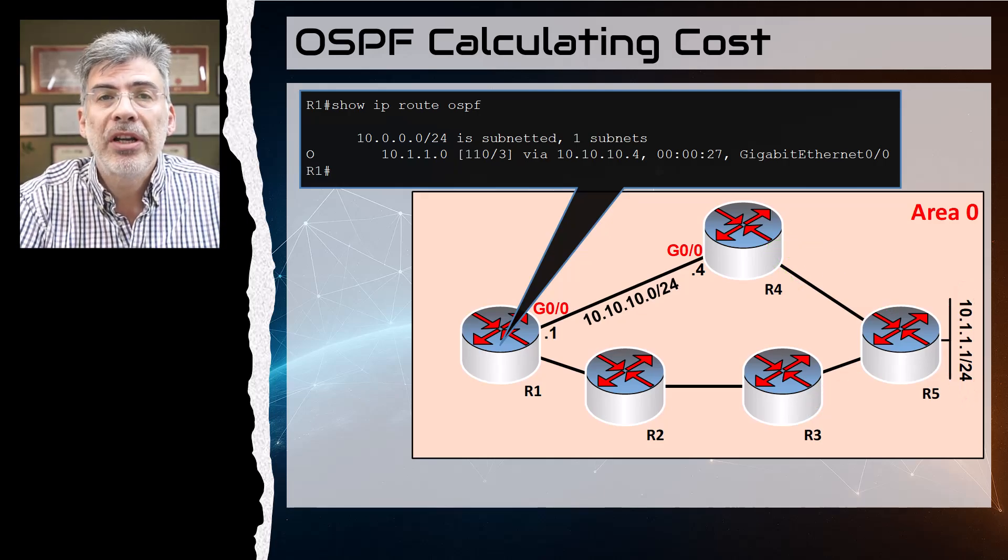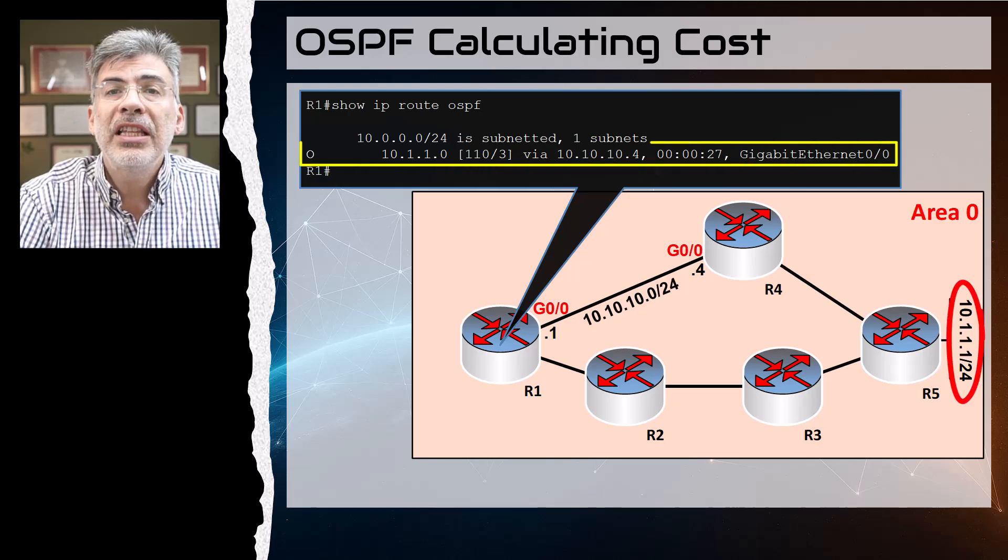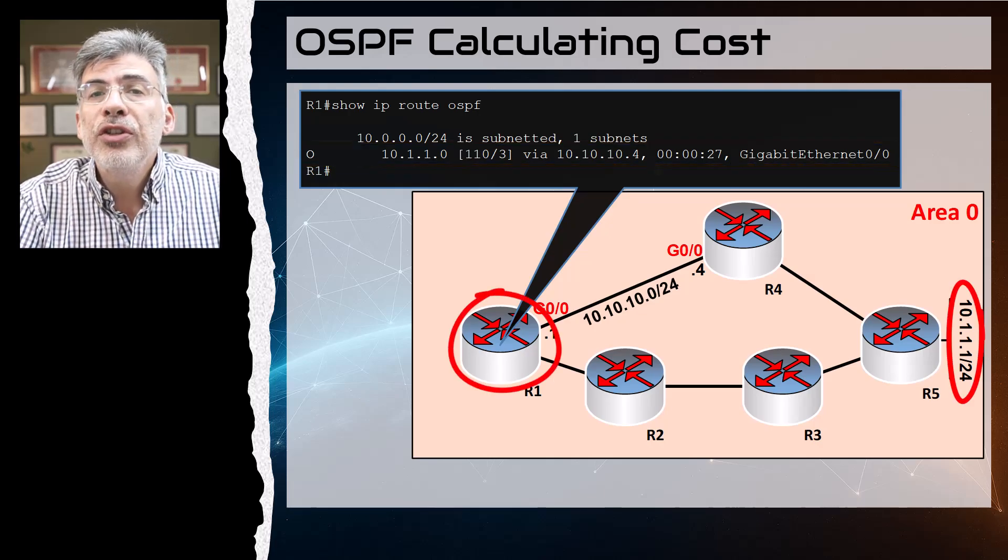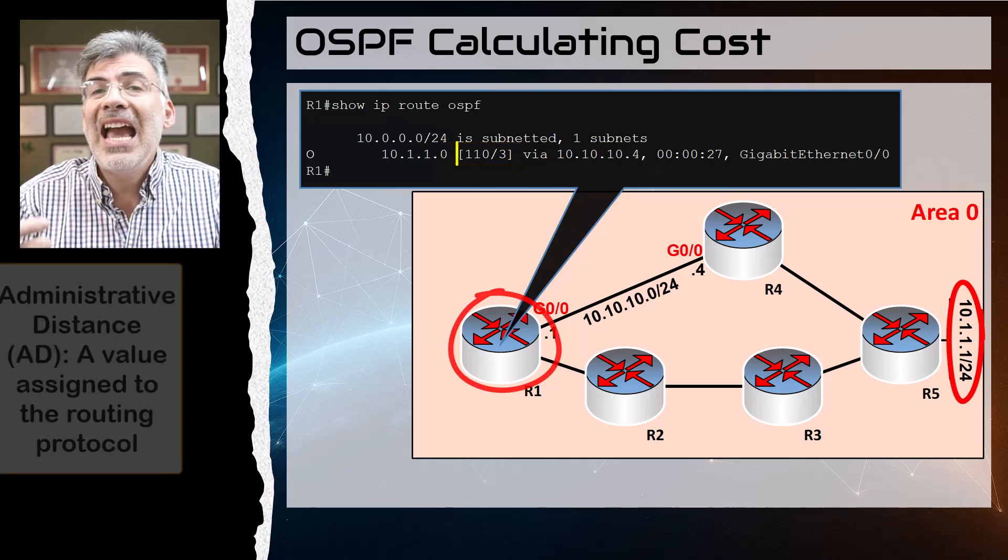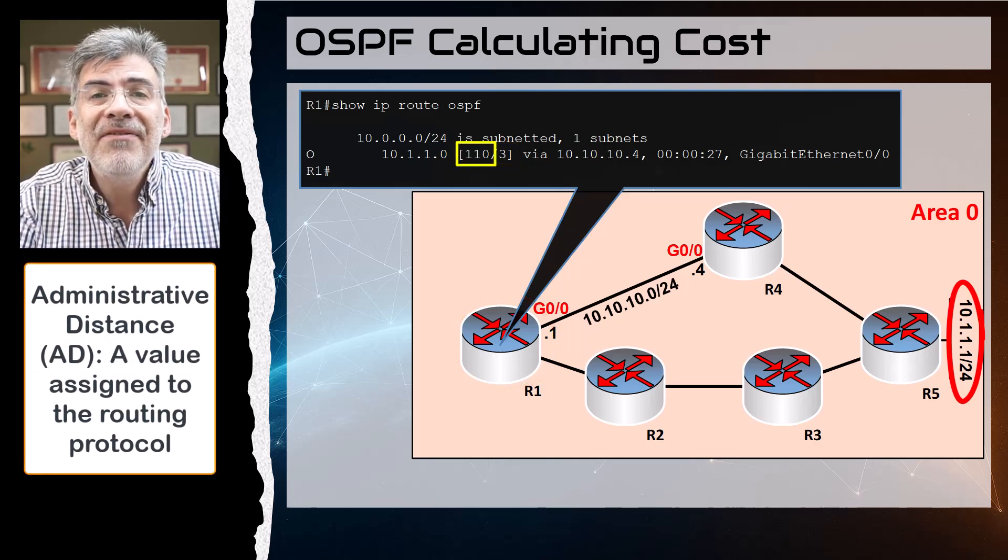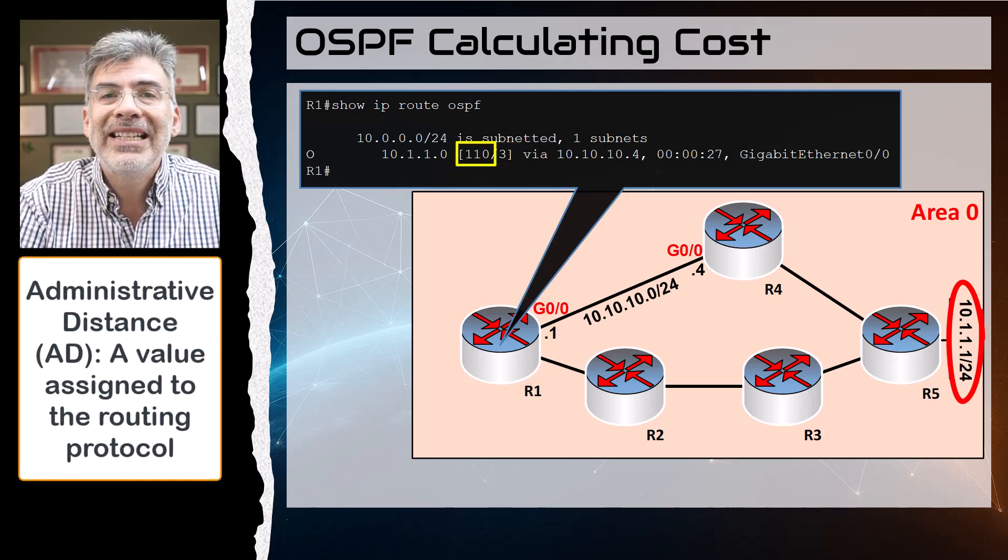The topology has converged, so all routers have learned about this network here. If you take a look at this routing table on R1, you'll see within these square brackets two numbers.